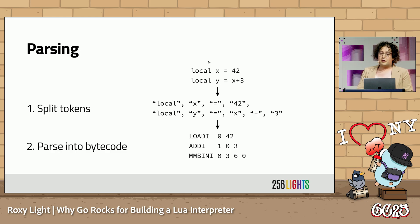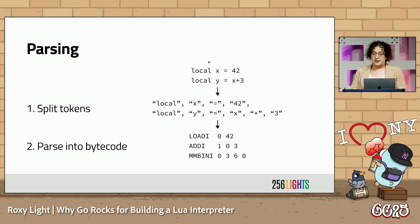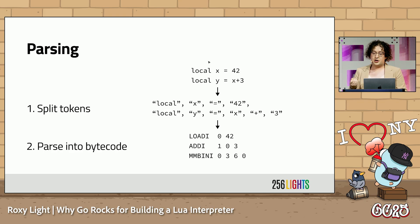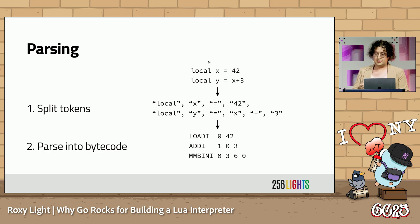Now that we've gone through the overview, let's zoom into steps one and two. On the top, we have some Lua source code. In step one, the lua-lex package, we split up the source into tokens. This is a term of art for words, punctuation, numbers, and string literals. We also strip out comments during this step.